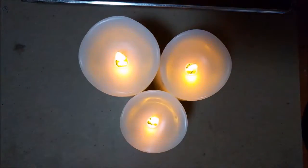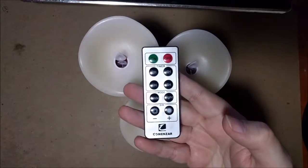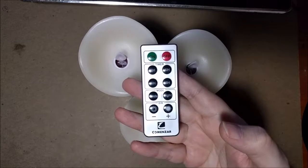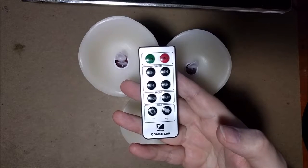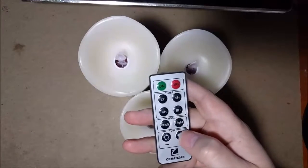So with the remote if you can see here, you have your on off, you have a timer: two hour, four hour, six hour, eight hour timer, so it's nice you can set it for a timer which is cool. You have your candle mode, your light mode, and then your dim switch here.